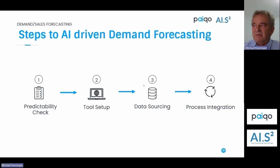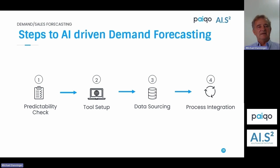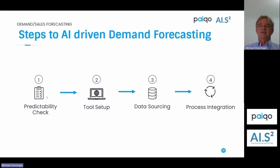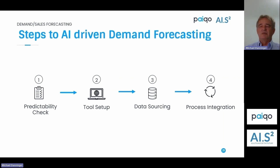The solution is available in the Azure Marketplace — you can get it immediately. We also offer an outlook on how to get to an AI-driven demand forecast. We typically encounter uncertainty from customers who don't know if their data is in the right shape for machine learning, or whether their business is predictable. So we offer a predictability check first. After that, tool setup is straightforward — go to the marketplace, click 'get,' and it auto-deploys in your tenant. Importantly, it's a managed application, not software-as-a-service, so all data stays in your tenant and you control access.